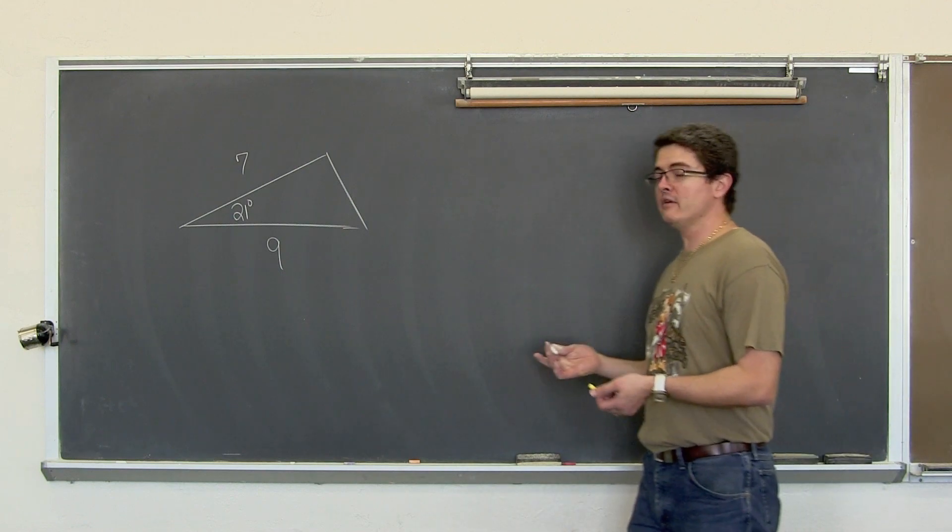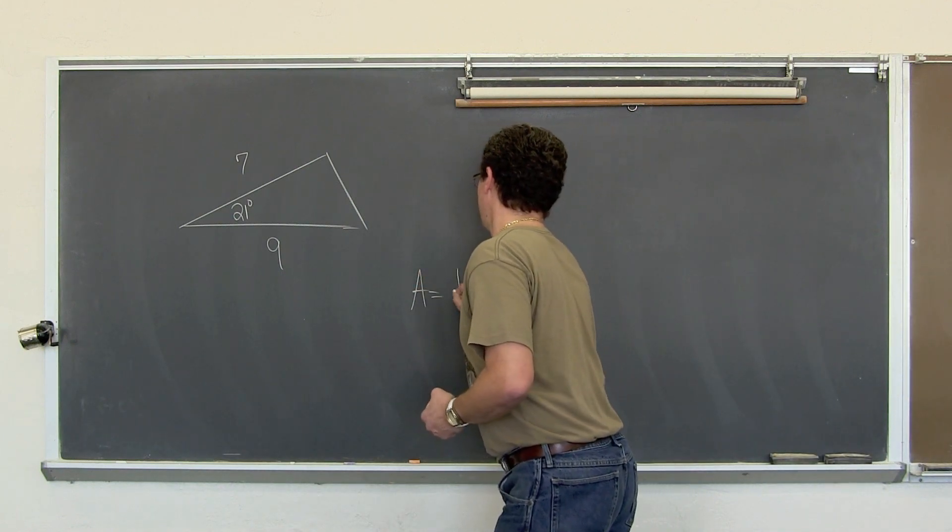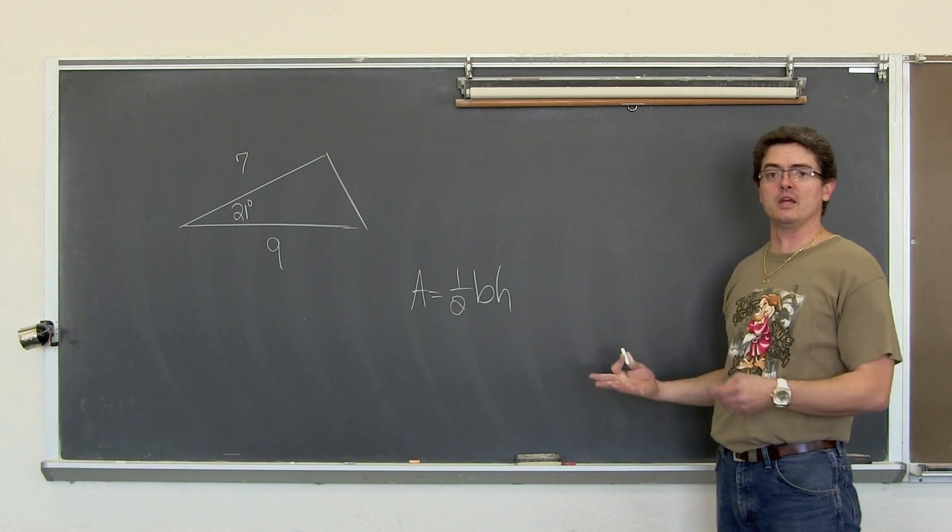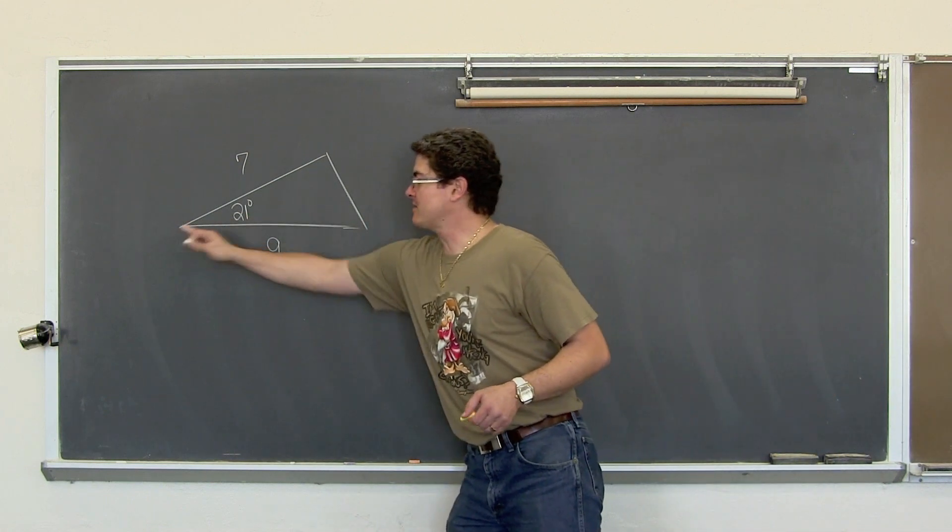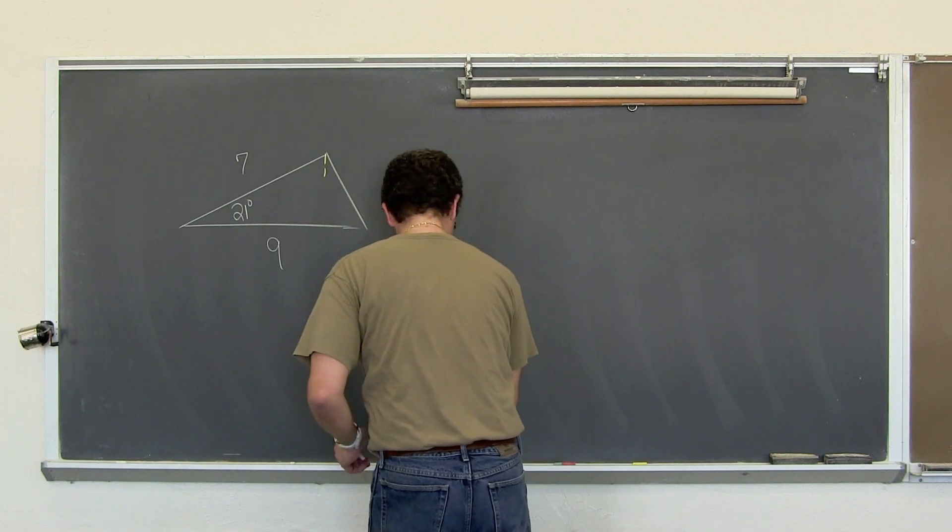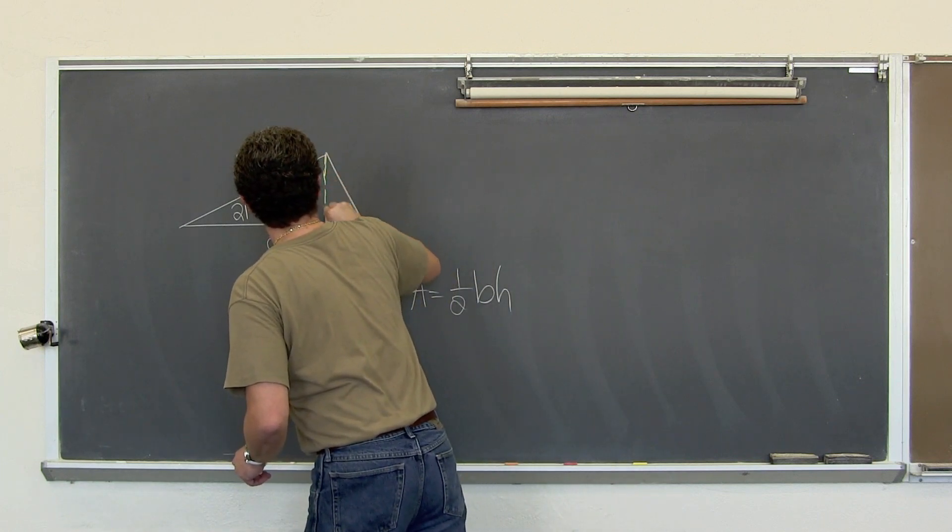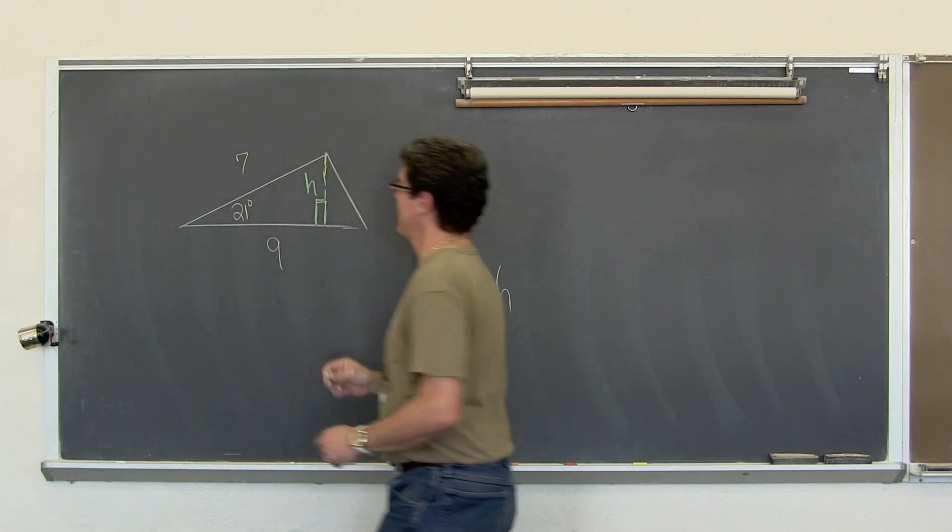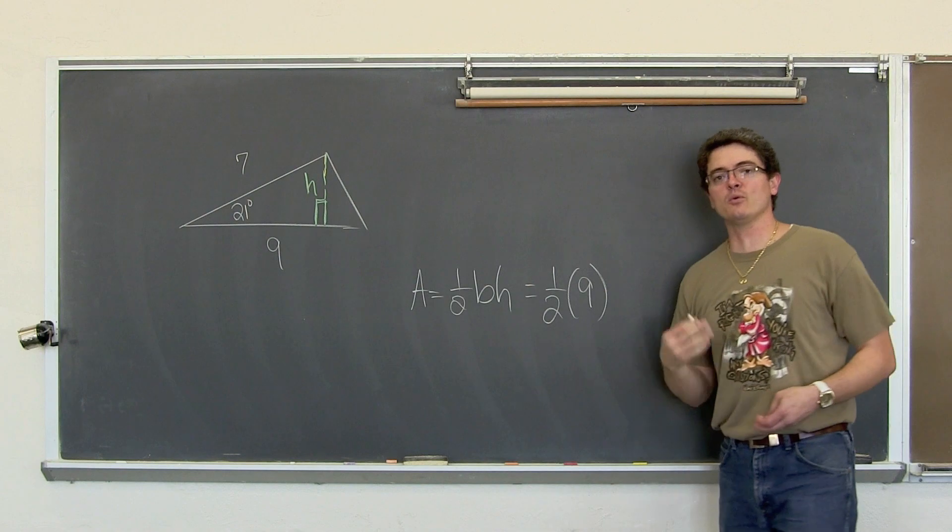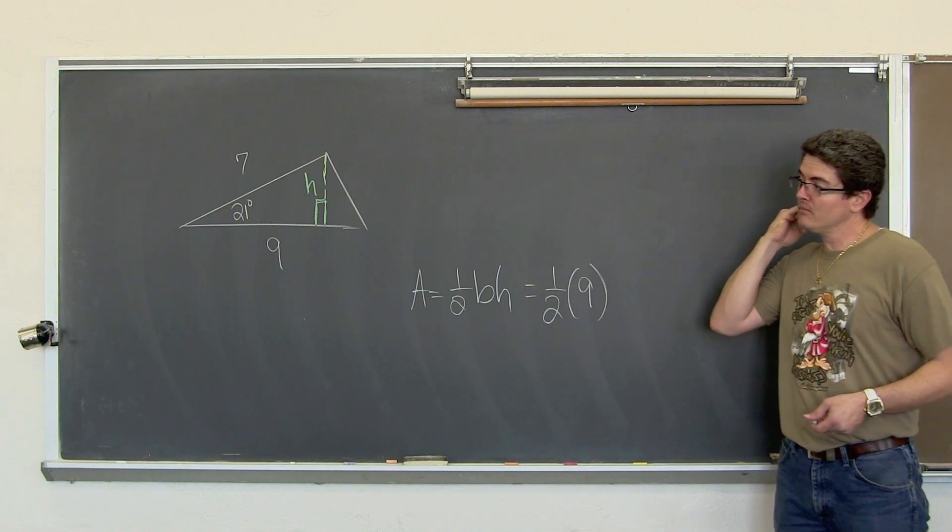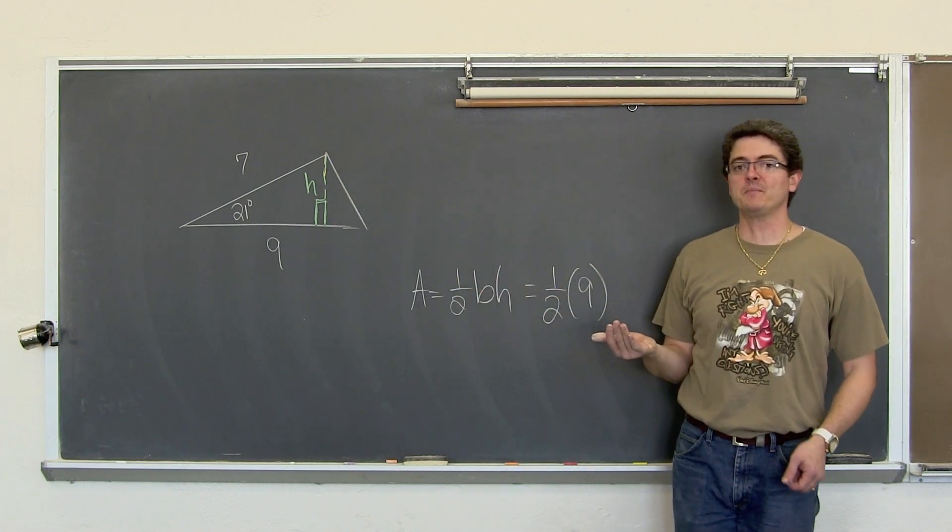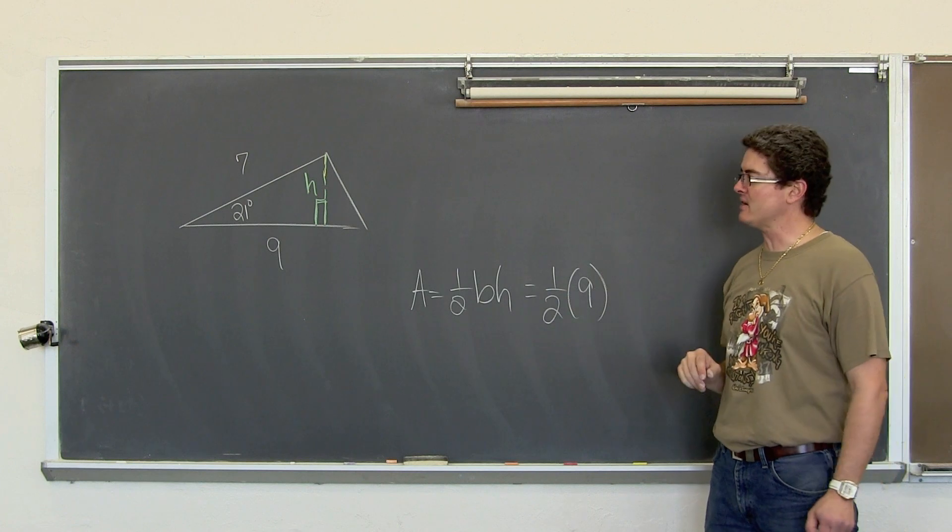We have an oblique triangle. It is not a right triangle. And we are going to find the area. Well, area of a triangle is equal to one half base times height. If you are going to find the area using this old formula, you need the length of the base and you need the height.